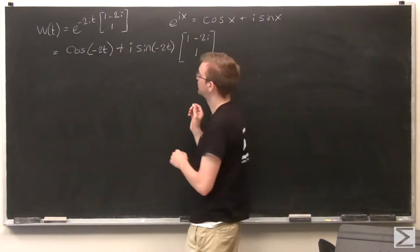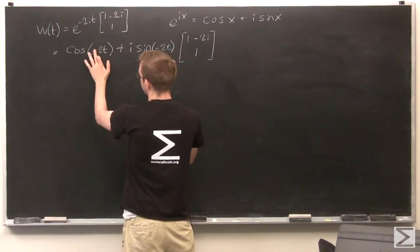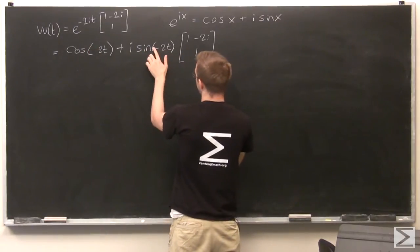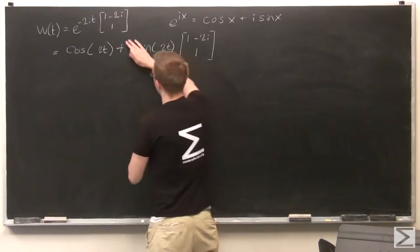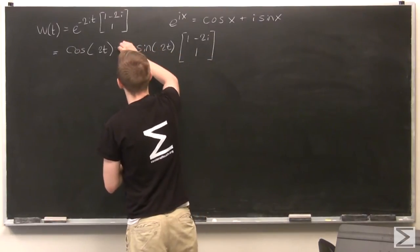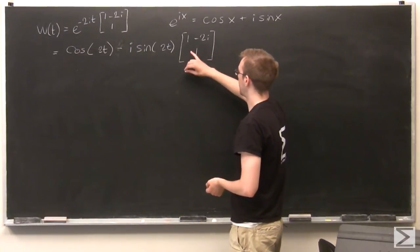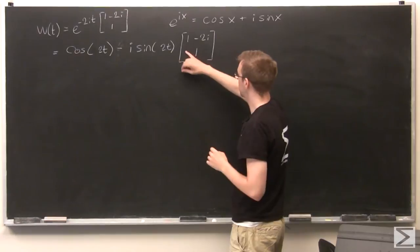Okay, cool. We know about cosine if you have a negative, that just goes away. And for sine, if we have a negative, we can take that and put it outside. So cosine(2t) - i*sine(2t). Now I'm going to distribute this part.